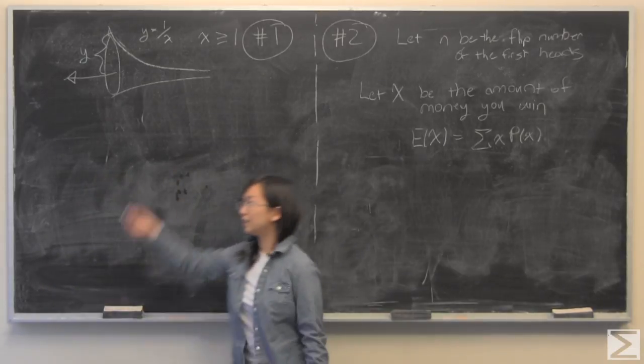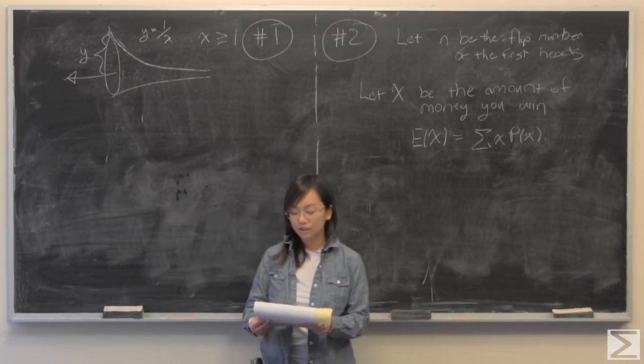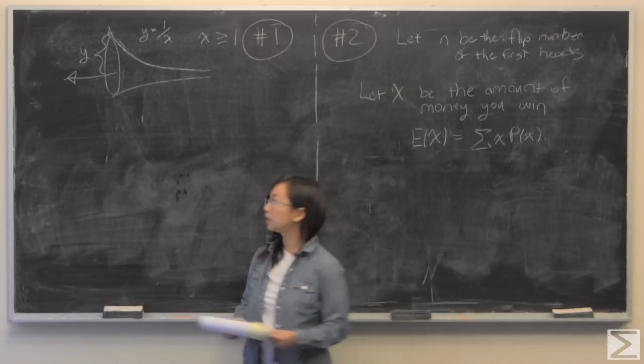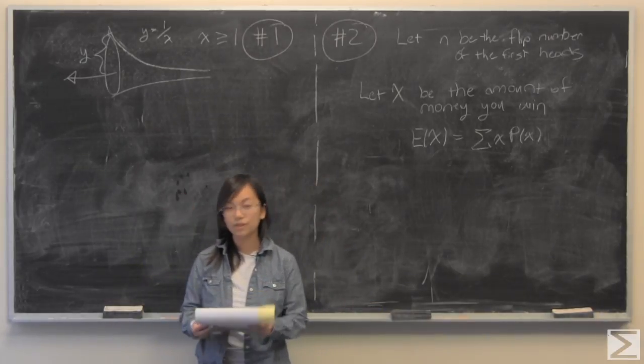So the first one is known as Gabriel's horn, also the painter's paradox. This is a really cool problem for someone in my calculus course, I believe Calc 2 or maybe Calc 1 2 will go over this. So let's get started.